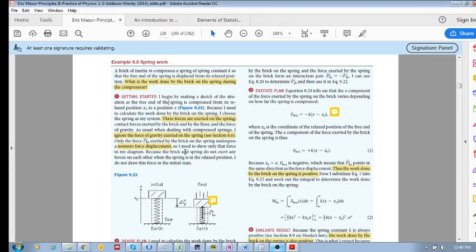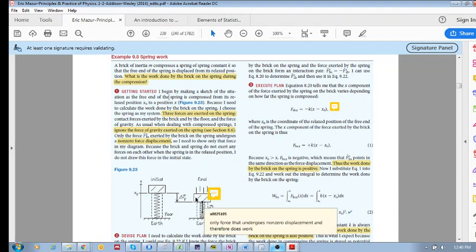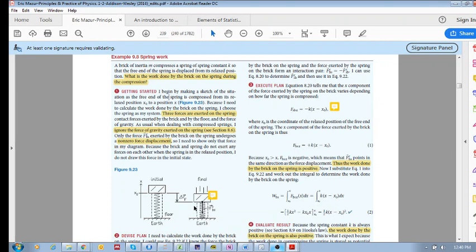So we know, intuitively, we know that the work done by the brick must be positive because the brick force is down and the displacement is down. And we know that the work done by the spring is negative because the displacement is down and the spring force is up.